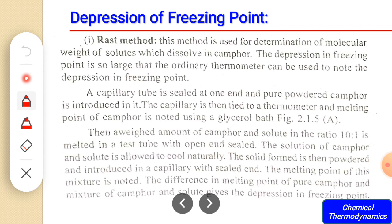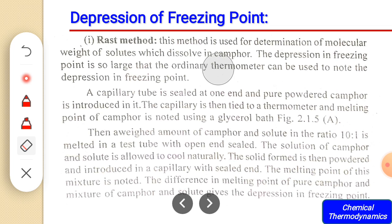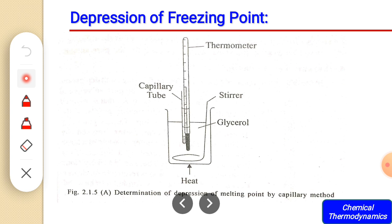This is the way to calculate the molecular weight of an unknown solute by using the depression of freezing point. There are two methods used for this determination. The first is the Rast method and the second is the Beckmann method. In the Rast method, the solute is dissolved in camphor, and the depression of freezing point is so large that an ordinary thermometer can also be used.